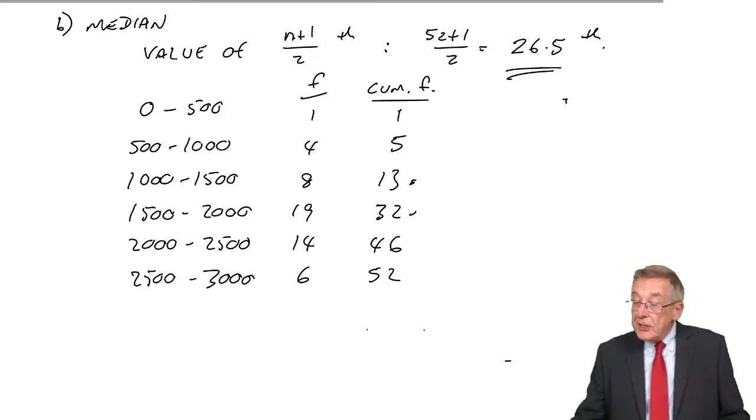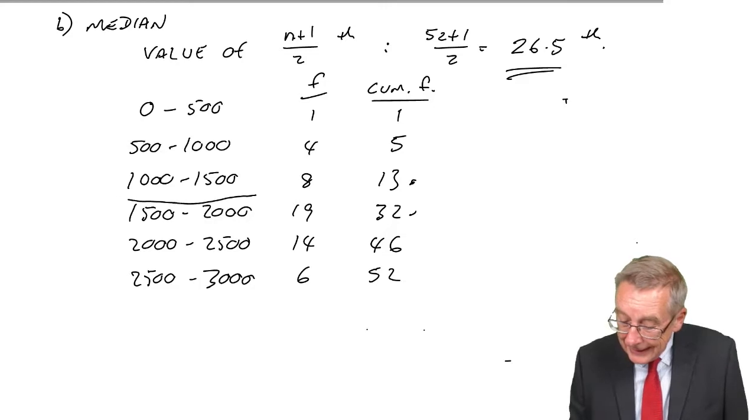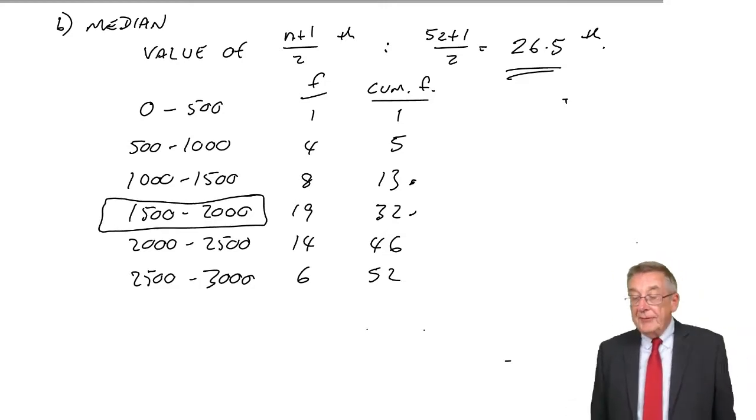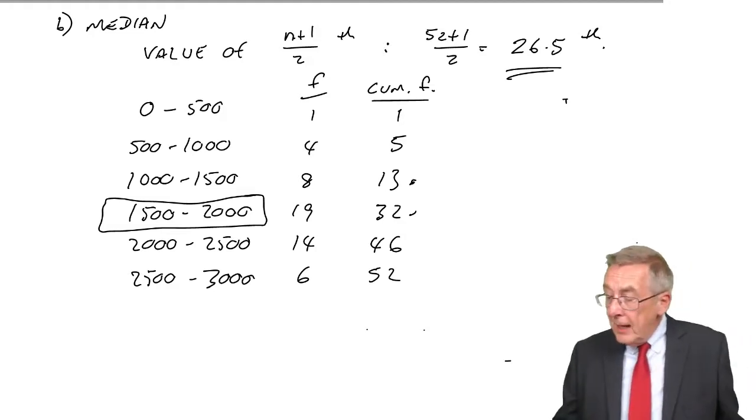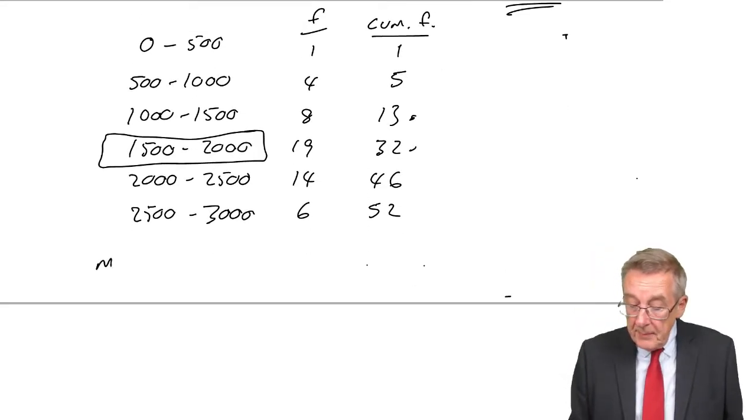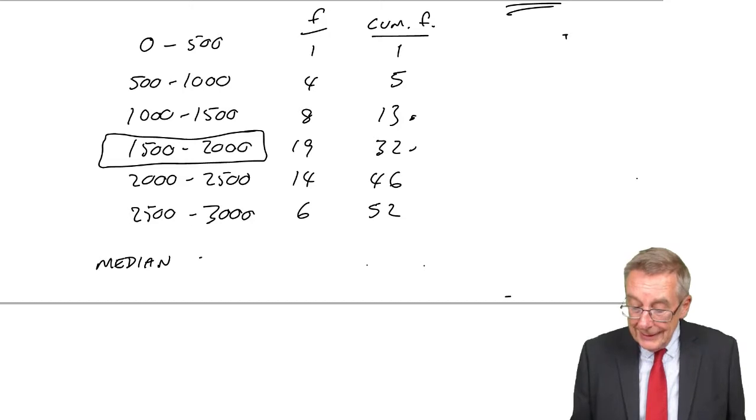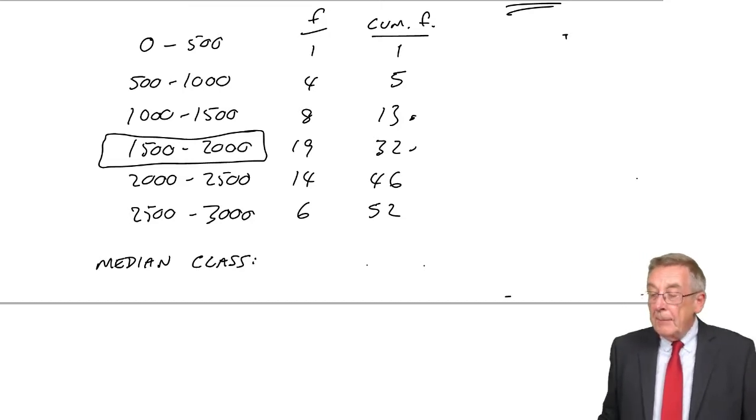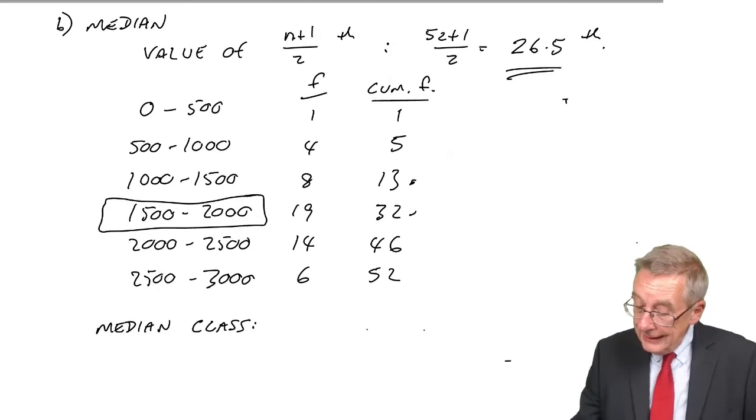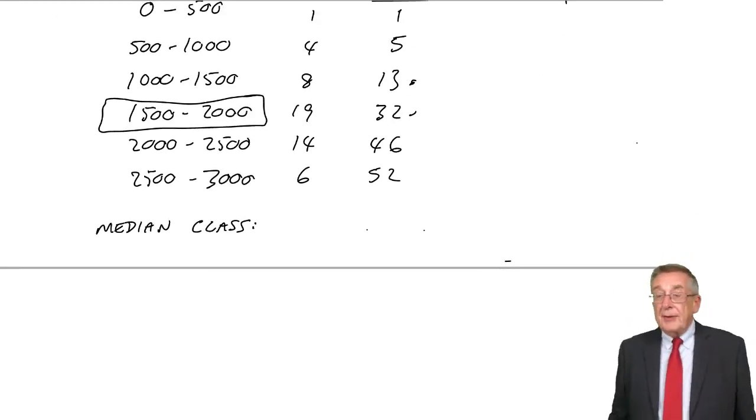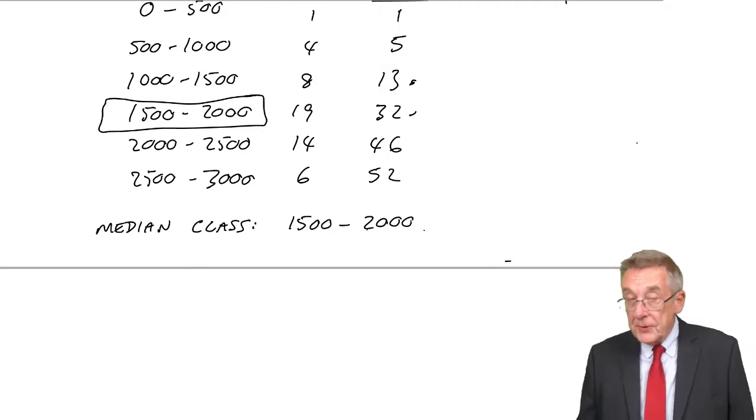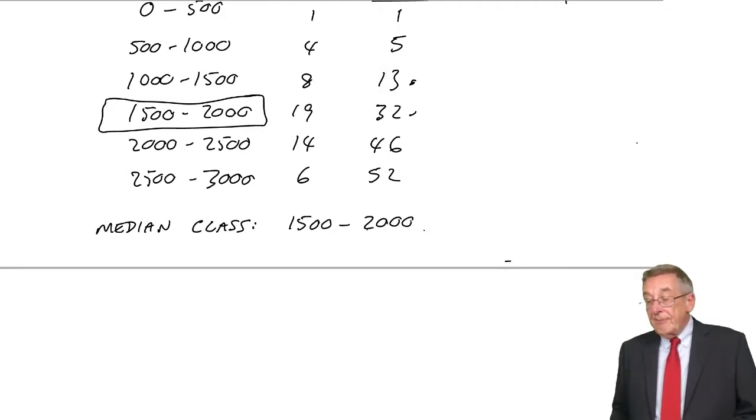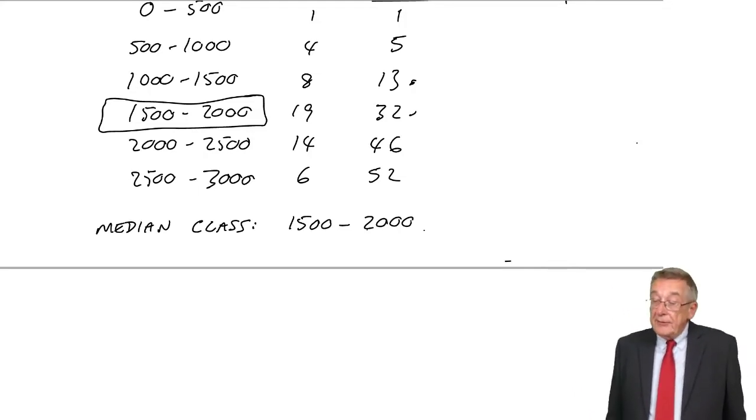So, where is the 26.5th? Well, the 13th one took us up to 1,500. The 32nd one took us up to 2,000. So, surely, the 26.5th one is somewhere between 1,500 and 2,000. And check the question carefully, because you might simply be asked for the median class or group. We want the value of the 26.5th, and the 26.5th observation must be somewhere between 1,500 and 2,000. And so, if they just say, what's the median class? Then there is your answer. Somewhere between 1,500 and 2,000.